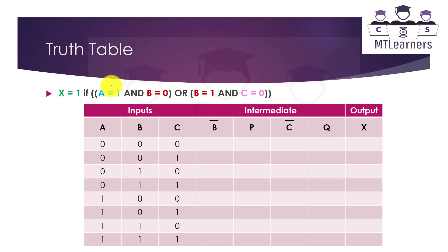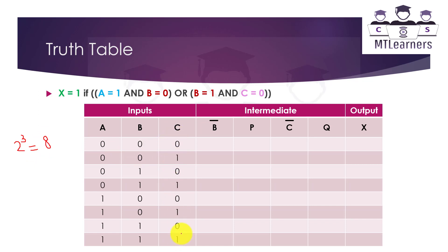Now we need to fill the truth table. We write three inputs A, B, and C, one output X, and intermediate columns: B-inverse, P, C-inverse, and Q. We have three inputs, so by the formula 2 to the power 3 equals 8, there must be 8 rows covering all combinations. Starting from the rightmost input C: alternate 0, 1, 0, 1, 0, 1, 0, 1.